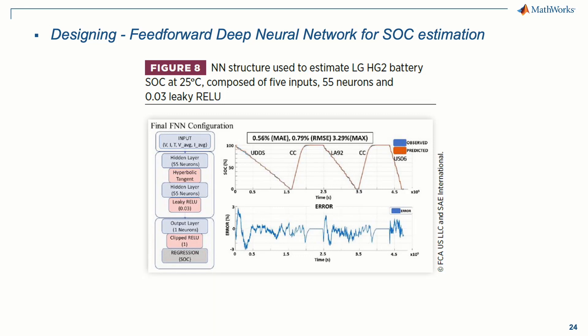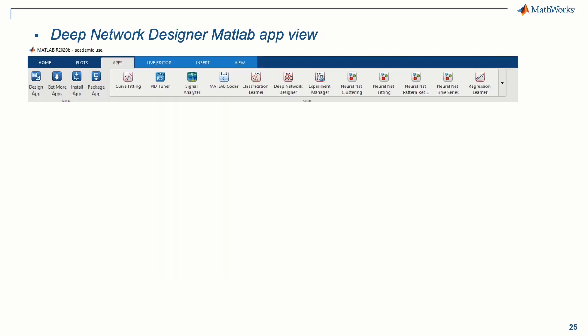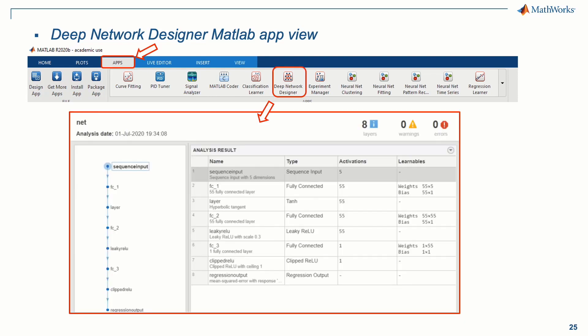On the next slide, we'll show how this model can be visualized in the MATLAB Deep Network Designer app. One way to visualize the neural network structure in MATLAB is by going through the apps to the Deep Neural Network Designer. You can import the model and open it in this app, where you can see how many activations, learnables, and what kind of structure it is. This is really useful if you want to quickly visualize the structure you just built, and you can also use it to build your own structure.